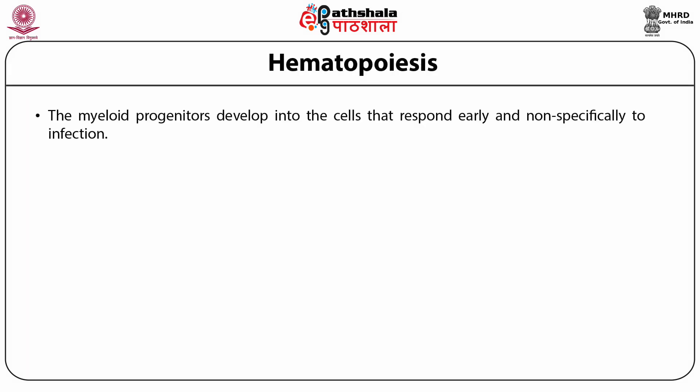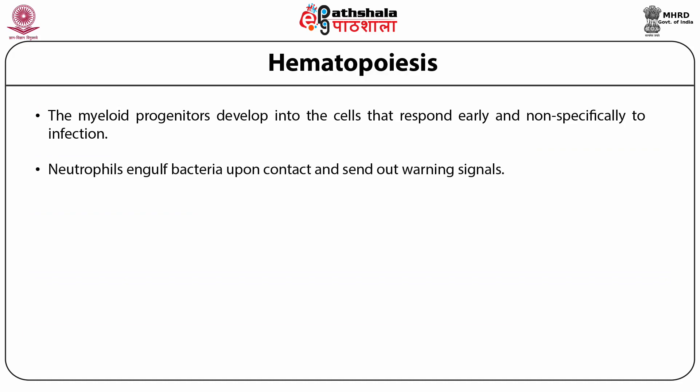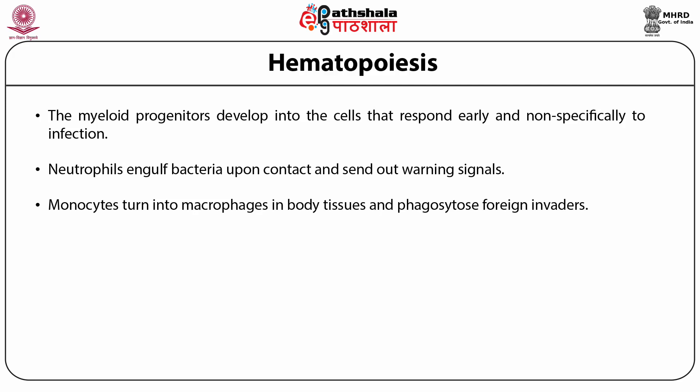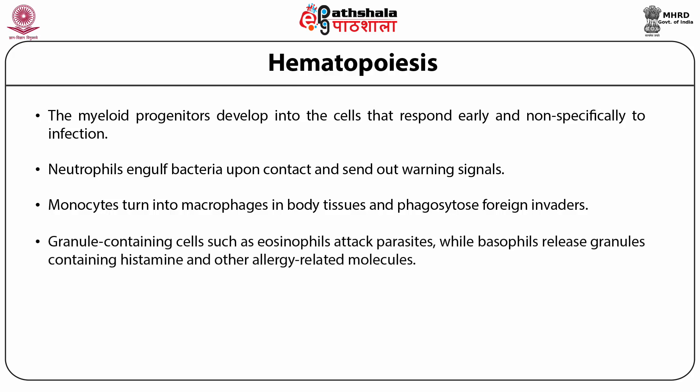The myeloid progenitor cells develop into cells that respond early and nonspecifically to infection. Neutrophils engulf bacteria upon contact and send out warning signals. Monocytes turn into macrophages in body tissues and phagocytose foreign invaders. Granule-containing cells such as eosinophils attack parasites, while basophils release granules containing histamine and other allergy-related molecules.